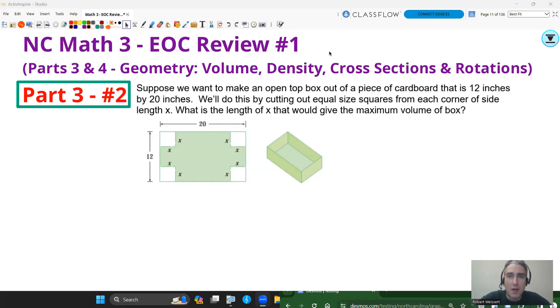Let's go on to the next question. Part 3, number 2. Suppose we want to make an open box out of a piece of cardboard that is 12 inches by 20 inches. We'll do this by cutting out equal size squares from each corner with side length x. What is the length of x that could give the maximum volume of the box? There's a lot to unpack here. This question is going to be using graphing technology to assist. First thing I want to do is when I take these corners out of the box, I'm actually subtracting two squares from each side.